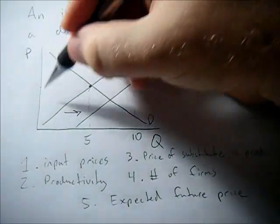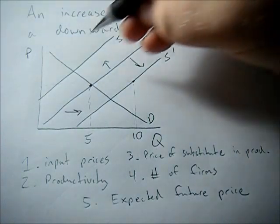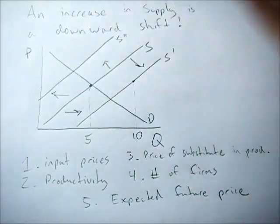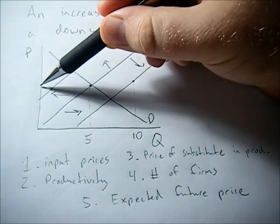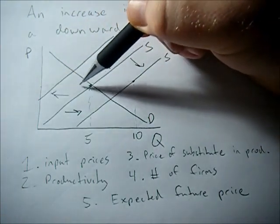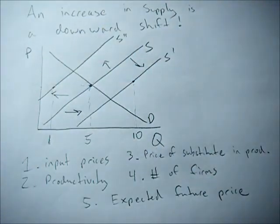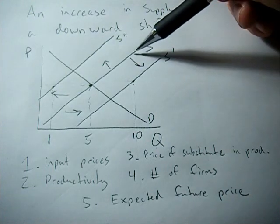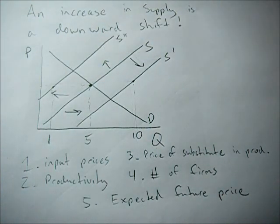A decrease in supply is an upward shift or a leftward shift. So do that same price trick. If the price is the same here, quantity supplied might be 1. So an increase in supply goes down, downward shift. Decrease in supply, upward shift.